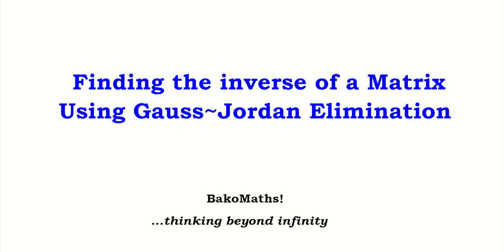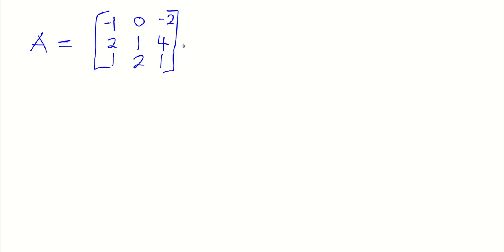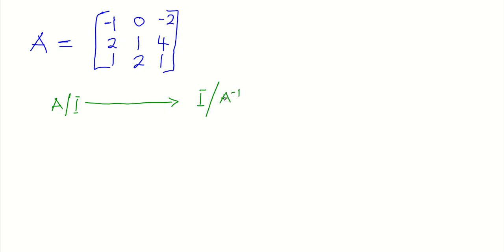Hello viewers, welcome back to Backmats. Today's lesson we'll be looking at how to find the inverse of a matrix using Gauss-Jordan elimination. We start with this matrix, and to find the inverse we first have to augment this matrix with the identity matrix. After applying a series of elementary row operations, we are going to get the identity matrix and the inverse of the matrix.